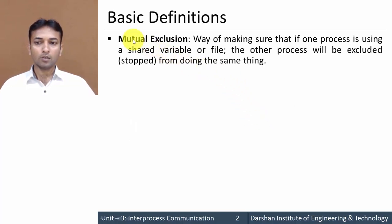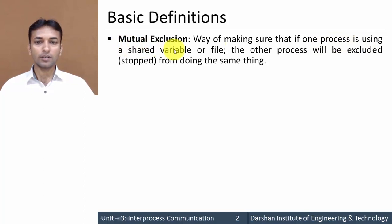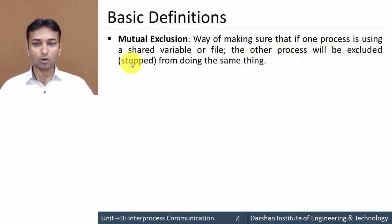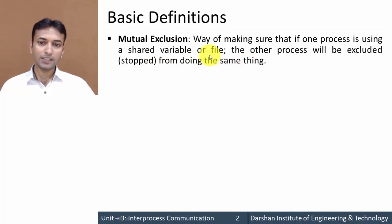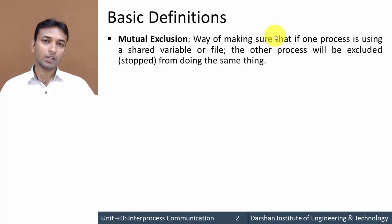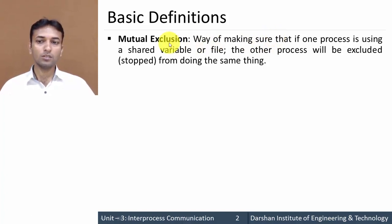If we want to define mutual exclusion, it is a way of making sure that if one process is using a shared resource or shared file, at the same time the other process will be excluded, or we can say stopped from doing the same thing. In other words, it is a way of ensuring that at a particular time only one process is using the shared resource or shared files.